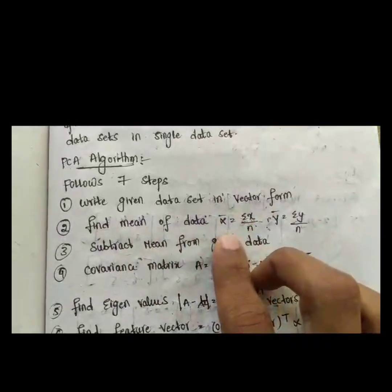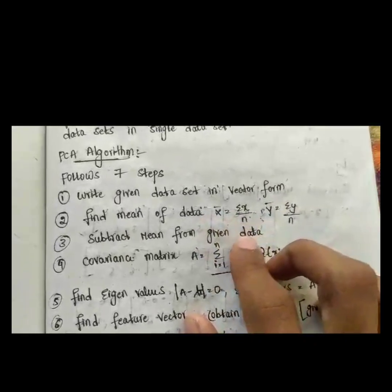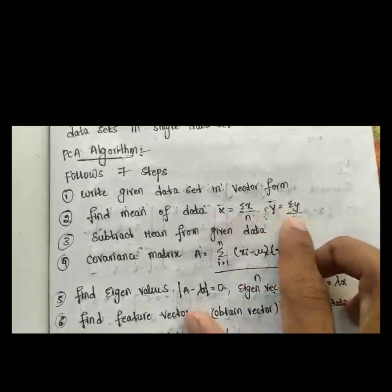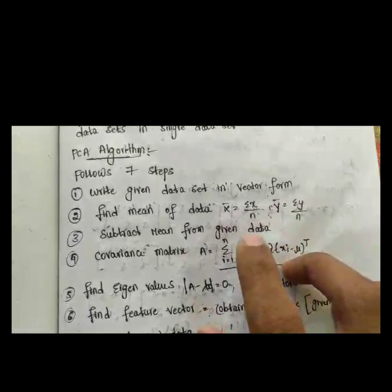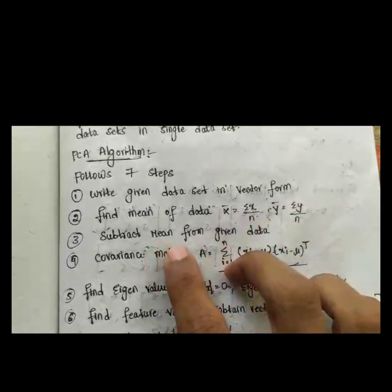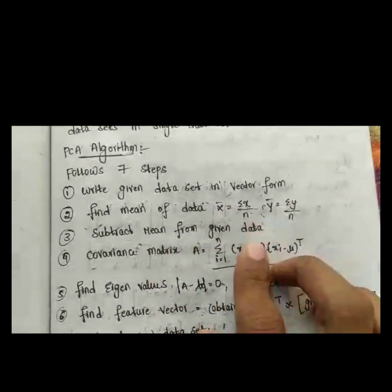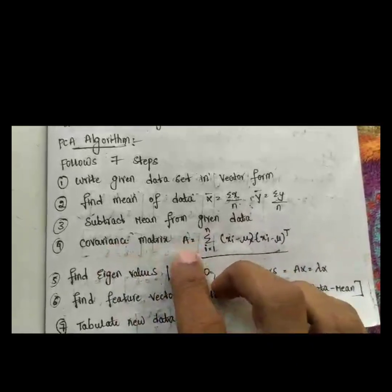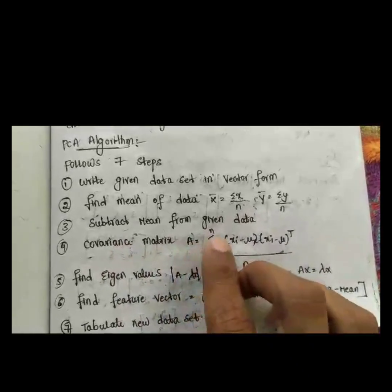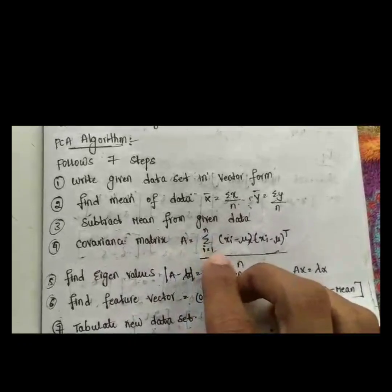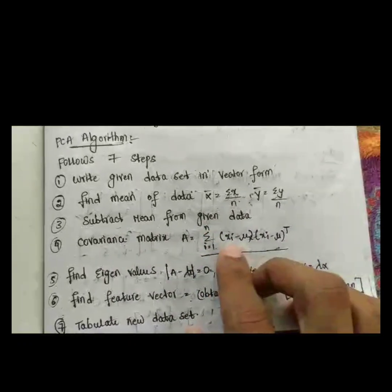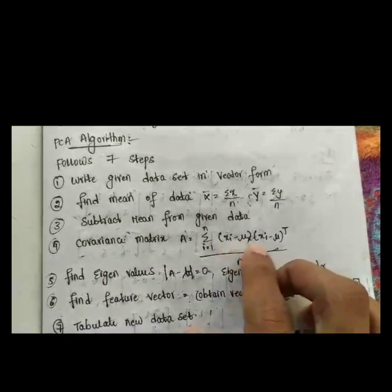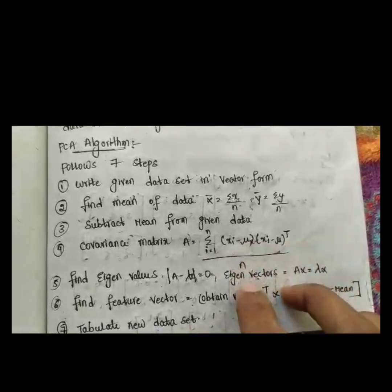That is x-bar and y-bar, where x-bar equals summation of x divided by n, and y-bar equals summation of y divided by n. The next step is to subtract the mean from the given data. Step four is to calculate the covariance matrix A using the formula: summation from i equals 1 to n of (x_i minus mu) times (x_i minus mu) transpose, divided by n.